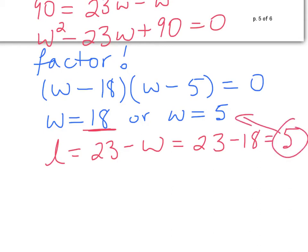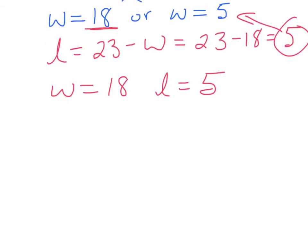Well, it's a rectangle. Doesn't matter which one's length or width, right? So now let's just say for argument's sake, w equals 18 and length equals 5. So we've got a rectangular slab that is 18 by 5. The area of this, if you multiply 18 and 5 ends up being 90. And if we add up all the sides, we end up with 46. So this is our rectangular slab.